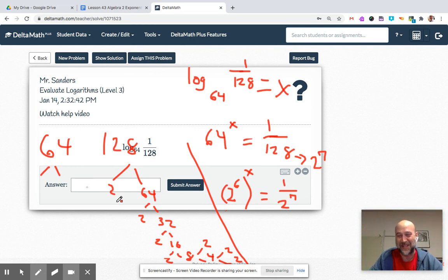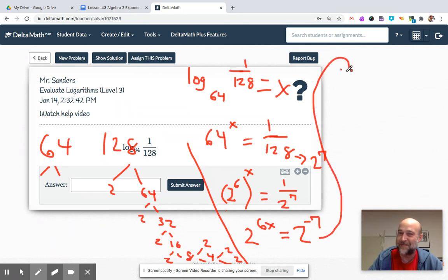Two to the sixth. Which now turns into, exponent to an exponent means multiply, six x equals negative exponent there. That one was kind of a little bit tricky, you just have to break it down.